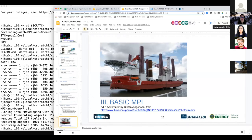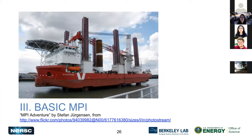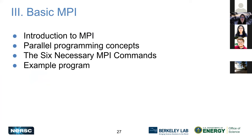You can also write hybrid programs where some processes all do one thing and others all do another thing. Now we'll talk about the six necessary MPI commands. Knowing just these six, you can write virtually any parallel program — perhaps not the most efficient, but anything you want. They are: MPI_Init, MPI_Finalize, MPI_Comm_size, MPI_Comm_rank, MPI_Send, and MPI_Recv.